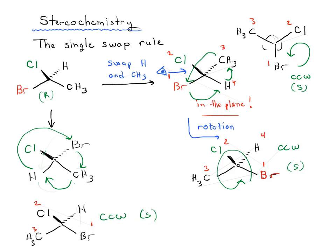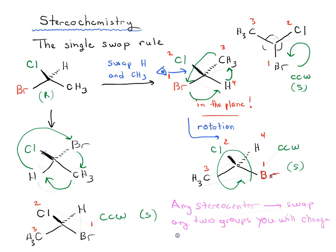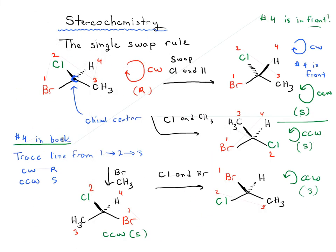The bottom line for this video is that on any stereo center, if you swap any two groups, you will change R to S or vice versa. That's the single swap rule. It'll become really handy when you have to draw the enantiomer of a given molecule, because all you have to do is swap any two groups — it doesn't matter which. All six possible swaps turn an R stereo center into an S stereo center.